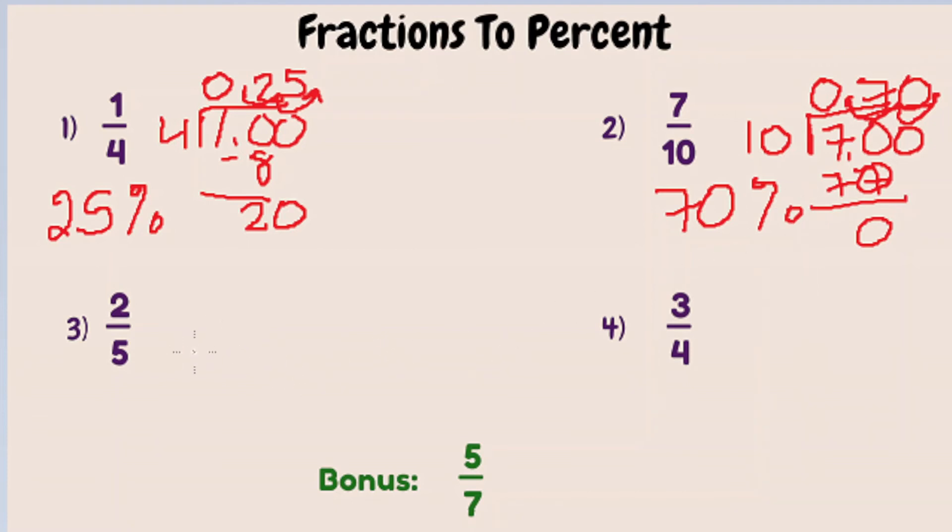Two-fifths. Let's divide two by five. Five goes into two zero times, but it goes into twenty four times. So we have a decimal of 0.4. If we move it two spaces, one, two, we'd have to add a zero there. It's going to be forty percent.